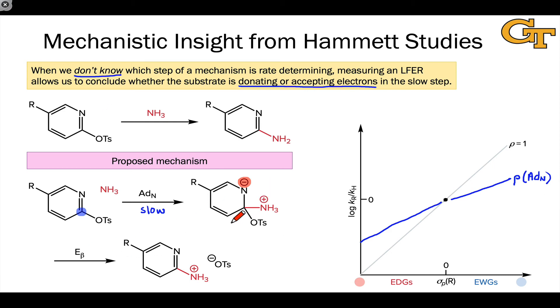What if the beta elimination step were rate determining? Well, in this case, the substrate is acting as a nucleophile on some level, donating electrons, giving electrons away.